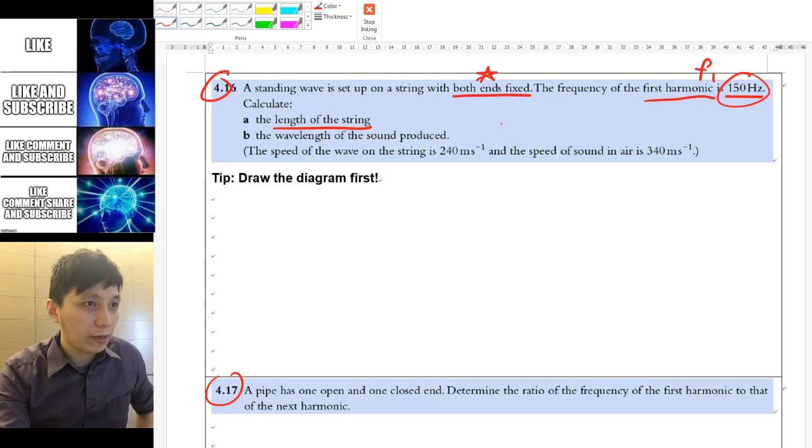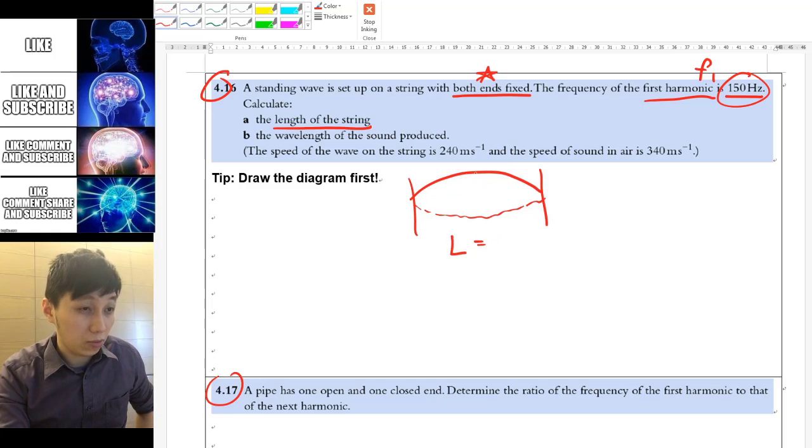So think about this, for both fixed ends, then the diagram for the first harmonic would be like the one that we drew initially last time. And so now it's asking you the length. So length should equal to half of the lambda. And so this is a key where it helps you to calculate further.